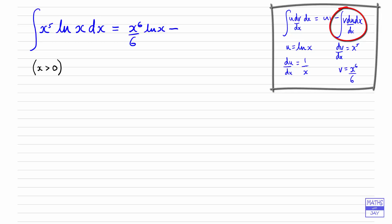And then we're going to multiply v by du by dx and integrate. So we're going to have minus, and the 1 over 6 can come outside of the integral, that's not going to affect it. So then we're going to have x to the 6 over x dx.